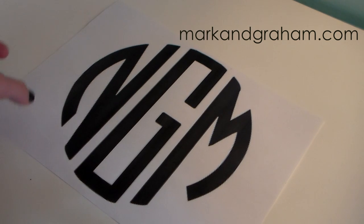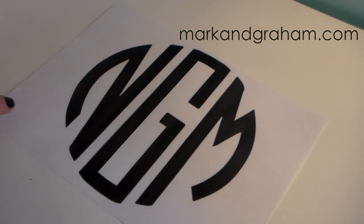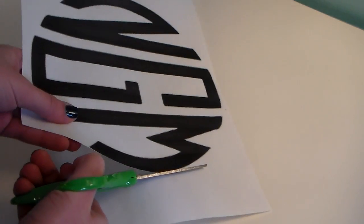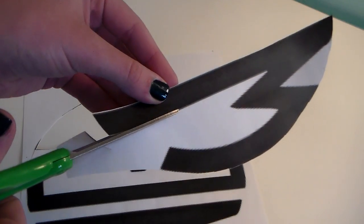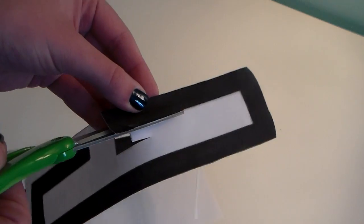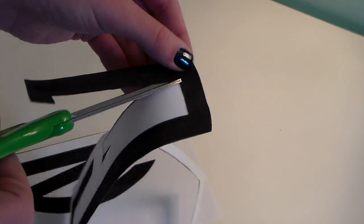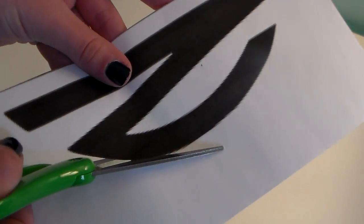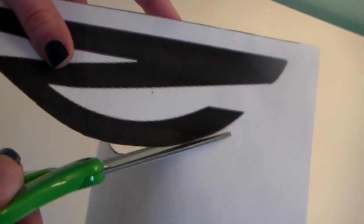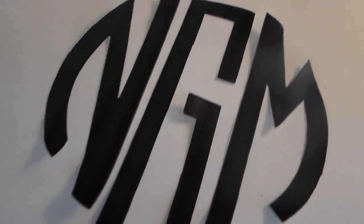You're going to need a monogram, so either draw it or print it off online just like I did. I'll link that website down below along with all the instructions and materials for all the crafts in the video. Cut out the monogram and later we're going to tape it onto our paper.